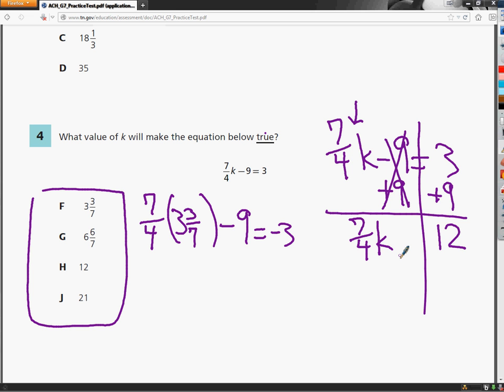7 fourths is a fraction. It's touching the k. When numbers and variables are touching, they're multiplying. When hamsters touch, they multiply. If you've ever had male and female hamsters at the same time, if they're touching, they're multiplying. So get ready for little hamster babies. So in this case, it's a multiply. So to get rid of multiply, I need to divide. Divide by 7 fourths.